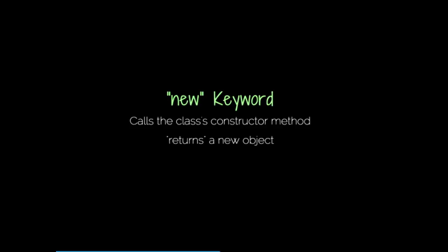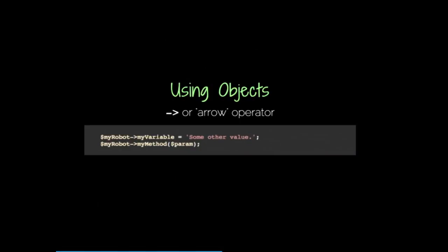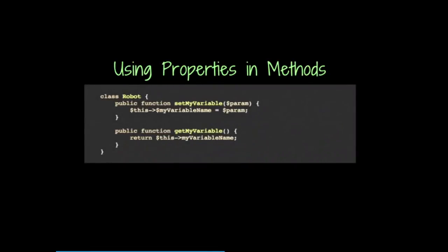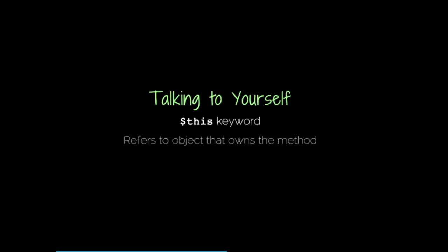How do you use objects? You use an arrow operator. You can use this to access both variables and methods on the same object. So how do you use properties in methods? You use another special identifier. Within your method, you'll have to access a class variable — but how do you differentiate that from a local variable within the function? You access it just like you would any other object, but there's a special keyword called 'this.' This set of functions is actually called a getter and a setter. The 'this' keyword refers to the object which owns the method — you're referring to that particular object.